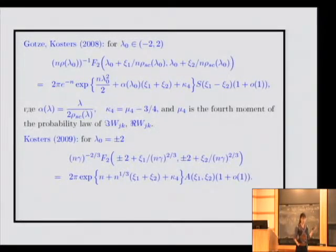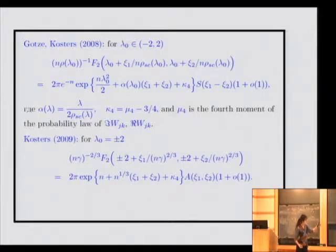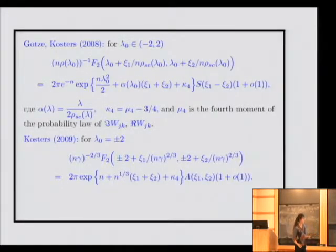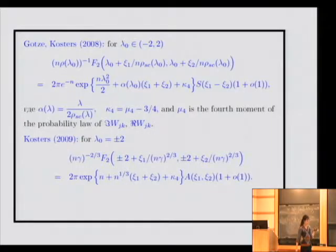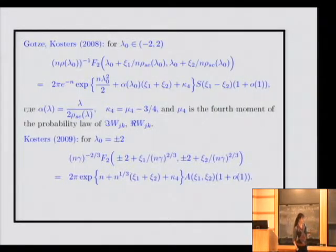Kappa_4 here is the so-called fourth cumulant of the matrix entries — it is the fourth moment minus 3 times the variance squared. For the Gaussian Unitary Ensemble, this coefficient is zero. So we obtain such asymptotics — the sine kernel in the bulk and the Airy kernel at the edge of the spectrum. The main question in this problem is how to obtain a convenient integral representation for F_{2k}. For the Hermitian matrix model case, Fyodorov and Strahov used orthogonal polynomials. Gertz and Koster used the method of exponential generating functions, but this method did not allow them to obtain the integral representation for k greater than 1.